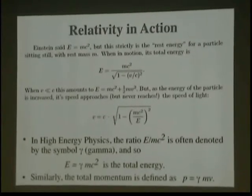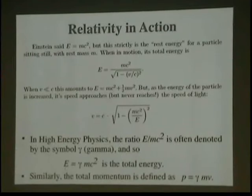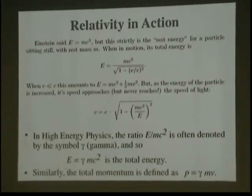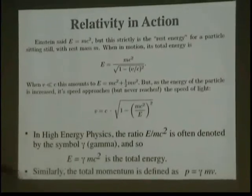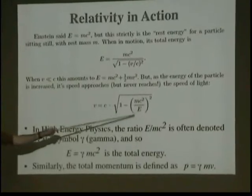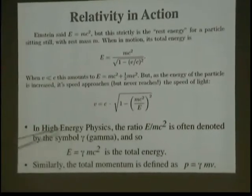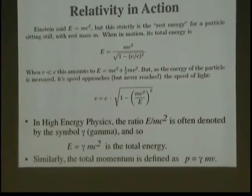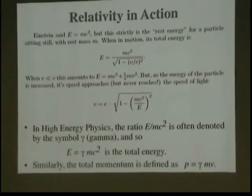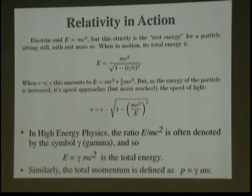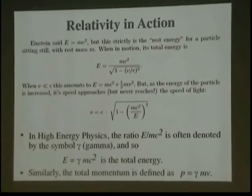Obviously, when the velocity is much, much less than the speed of light, this just comes out to be MC squared plus 1 half MV squared. Sort of the classical measure of energy. But, as the energy of the particle is increased, as it approaches the speed of light, and it can never exceed or even reach the speed of light, like here, things change. This ratio equals E over MC squared reversed, we often denote as gamma. And so, we can say the total energy of a particle, relativistically, is given by gamma MC squared. So, the total momentum, related, is gamma MV.